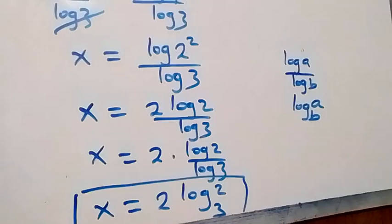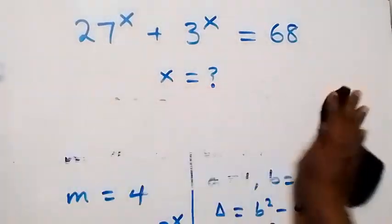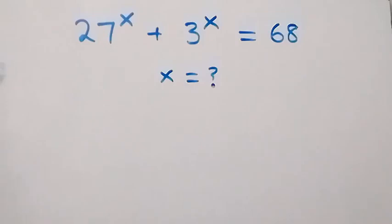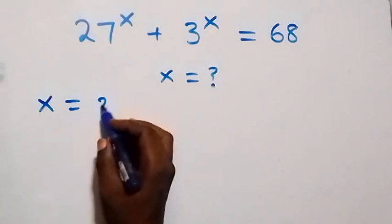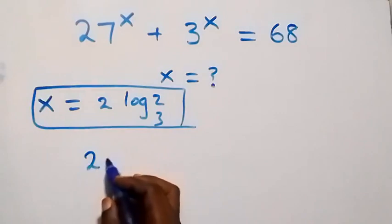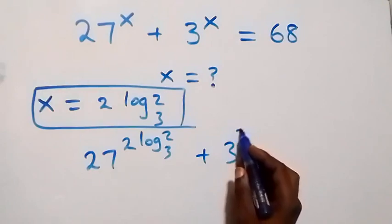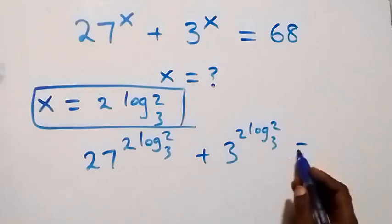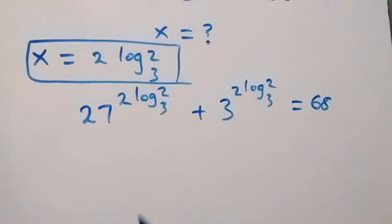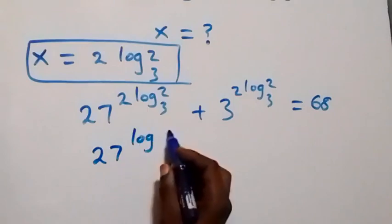So the solution to this problem is x = 2·log_3(2). Let's verify this by substituting x = 2·log_3(2) back into the original equation 27^x + 3^x = 68. We get 27 raised to power (2·log_3(2)) plus 3 raised to power (2·log_3(2)), which should equal 68.